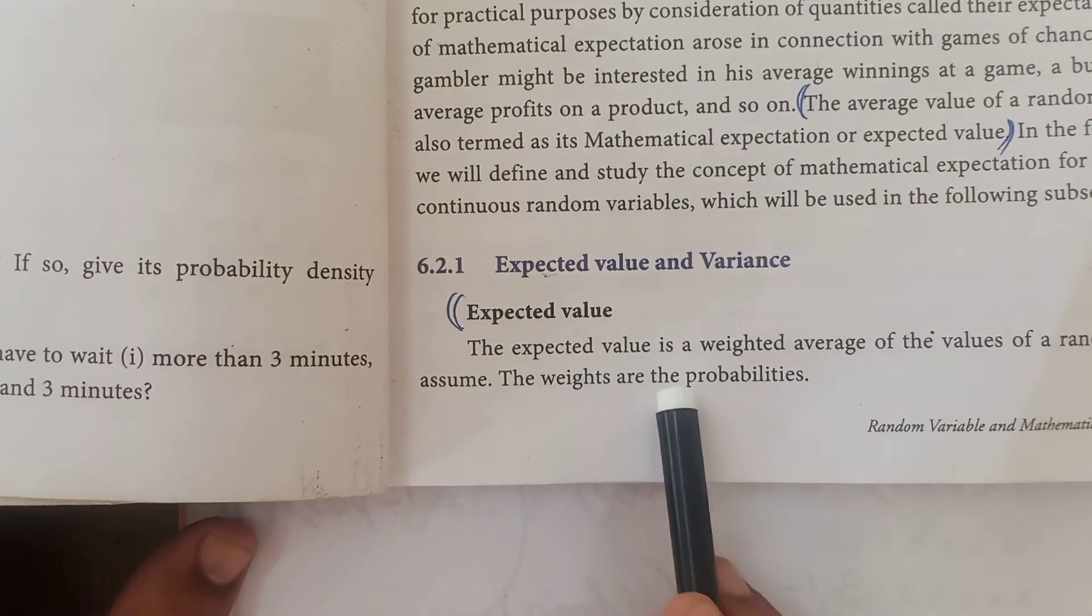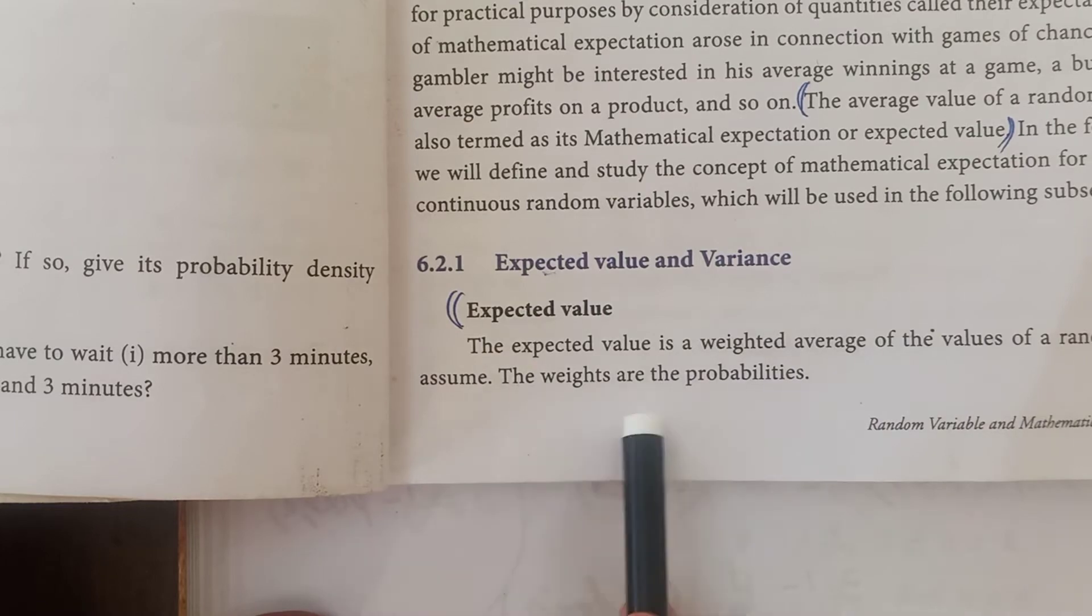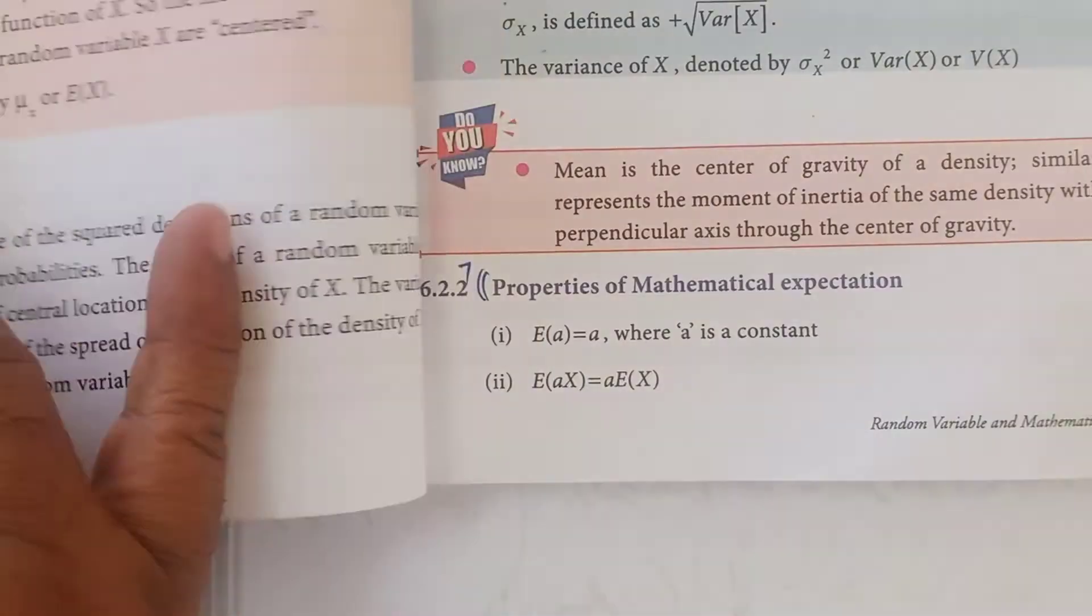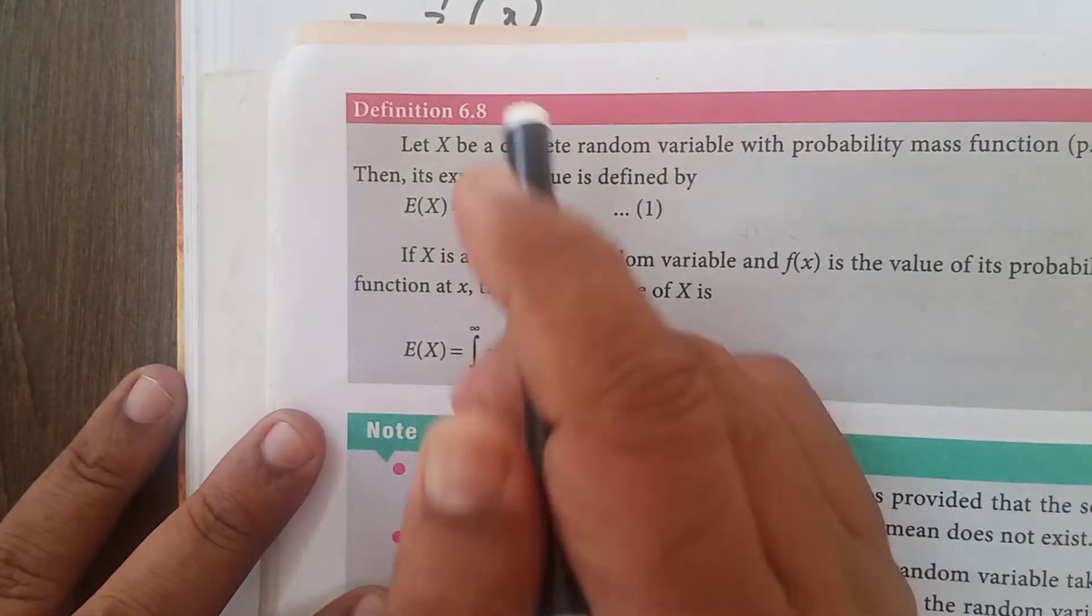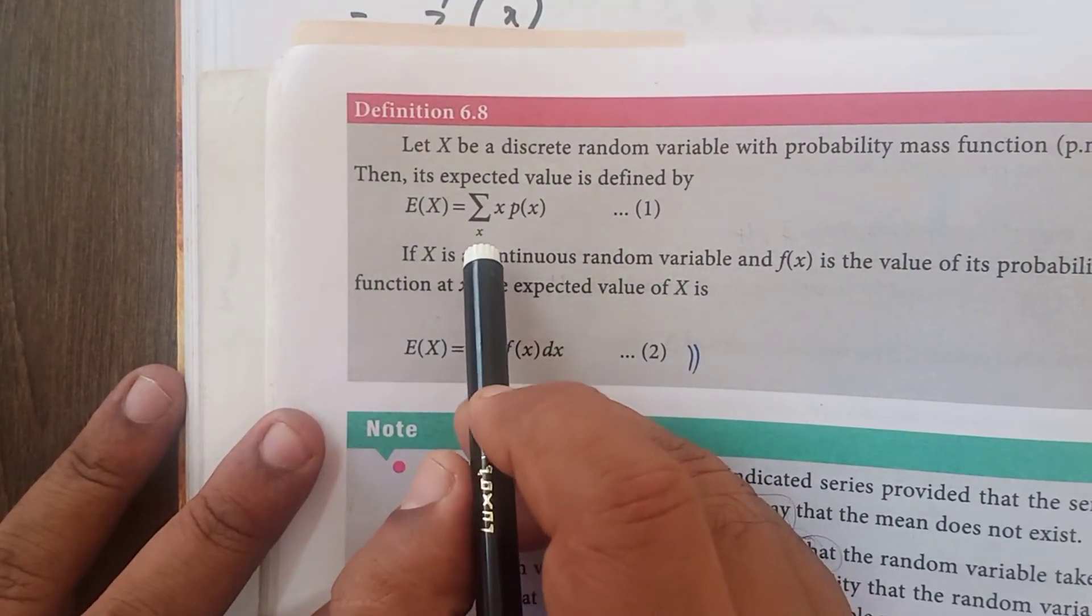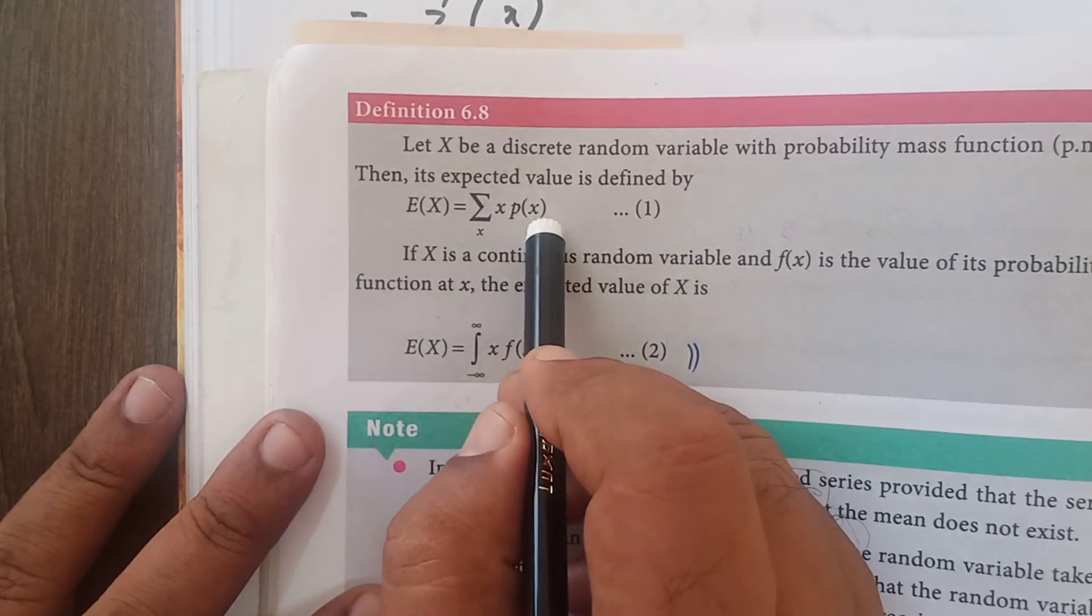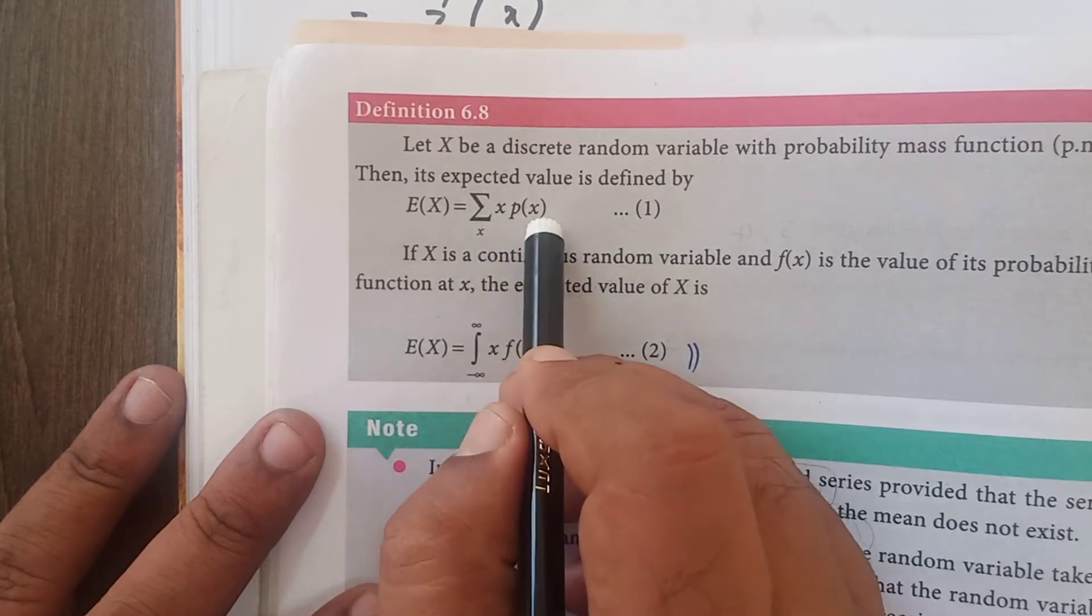The expected value is a weighted average of the values of a random variable that may assume. The weights are the probabilities. You just note out the formula for expectation of x. First formula: expectation of x that is equal to sigma x i p of x i, sigma x i p of x i or sigma x p of x.